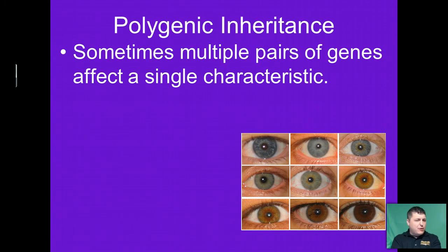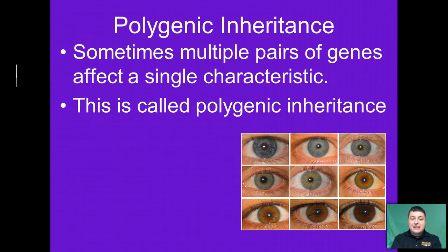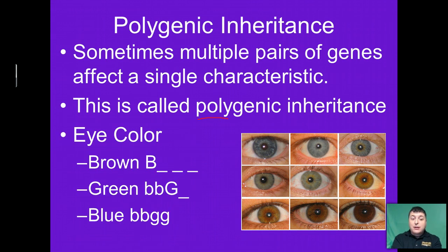Another form of alternate pattern of inheritance would be polygenic inheritance. In polygenic inheritance, there's more than a single pair of genes affecting a characteristic — poly meaning many genes controlling a single trait. In the case of eye color, there are at least two pairs of alleles coding for a particular trait, and depending upon the combination that you receive, that's going to give you a different eye color.